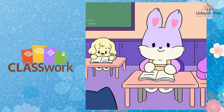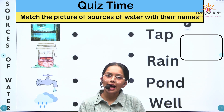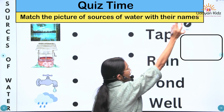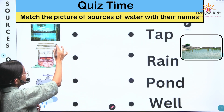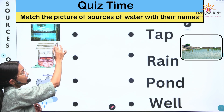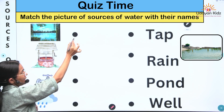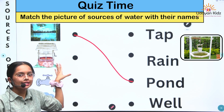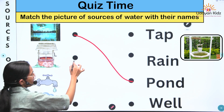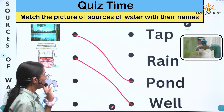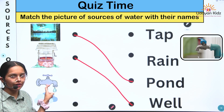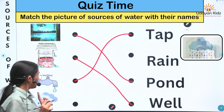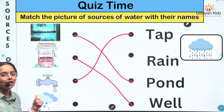Now it is quiz time. Let's solve the question. Match the picture of sources of water with their names. First one — what is this? This is pond. Second one is well. Third one is tap. Last one is rain.